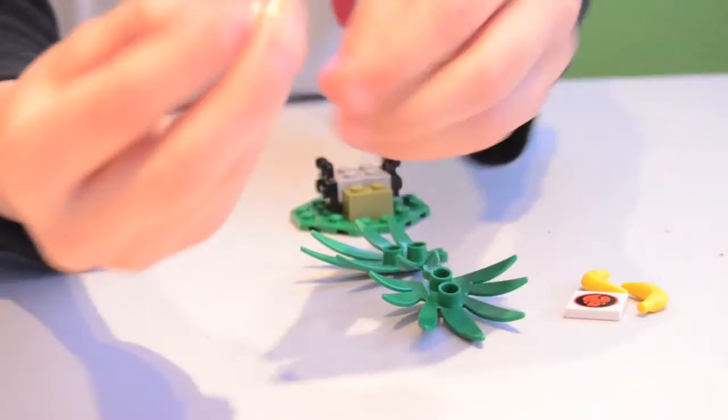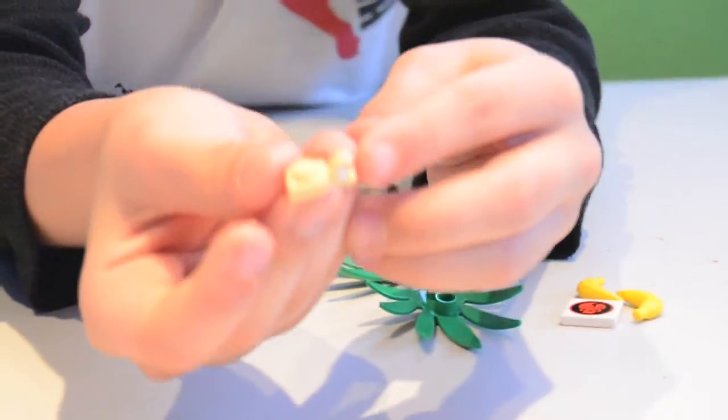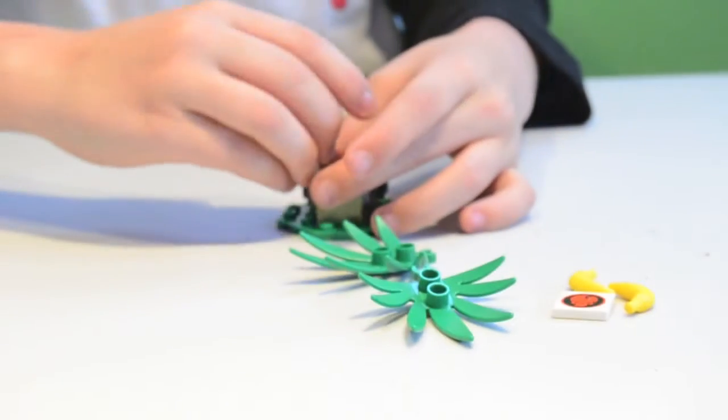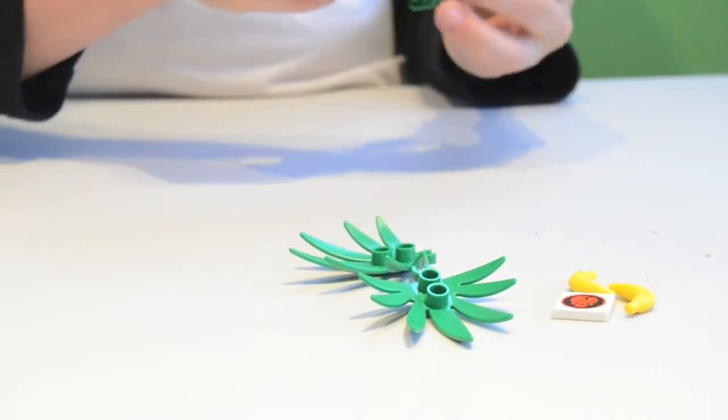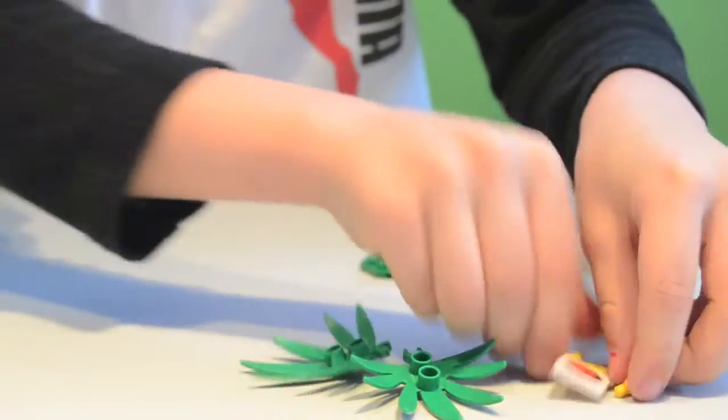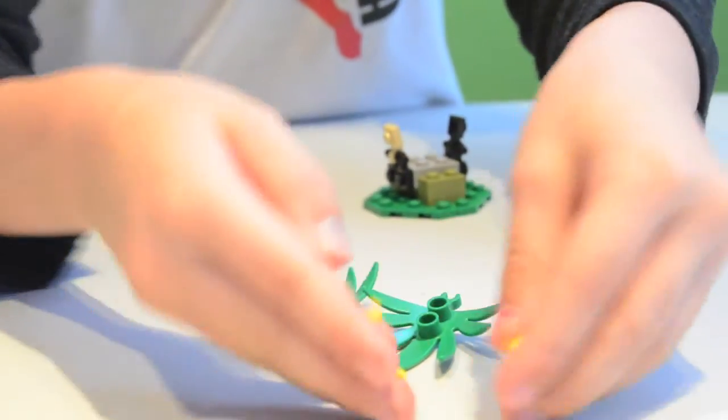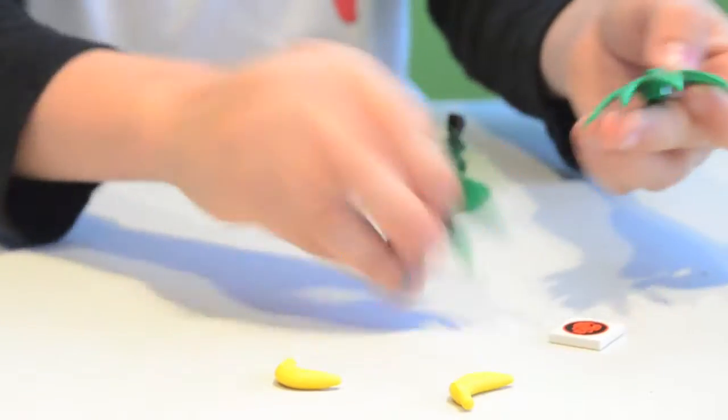Then you take these clamper things and stick them right here. Then if you have LEGO bananas then you might need those, you might need these.